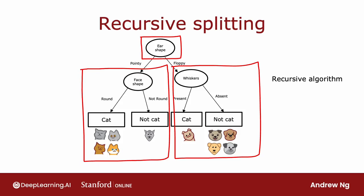If you look at software implementations of decision trees, you'll sometimes see references to a recursive algorithm. If you don't fully understand the concept of recursive algorithms, don't worry — you'll still be able to complete this week's assignments and use libraries to get decision trees to work.